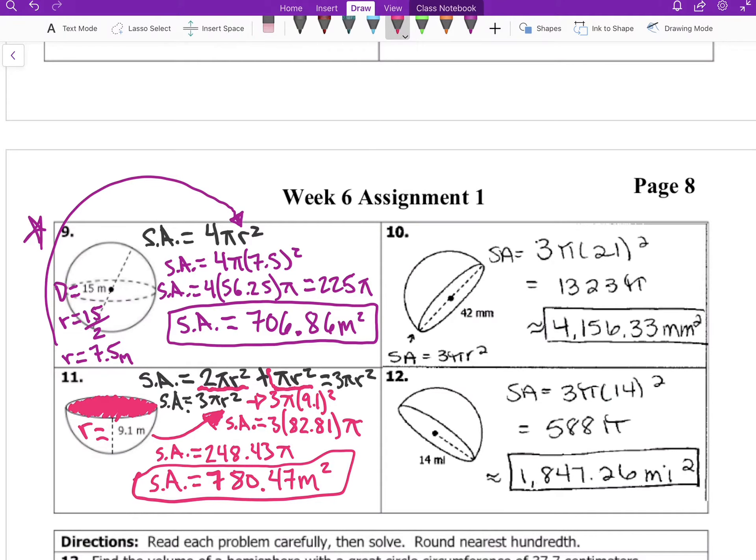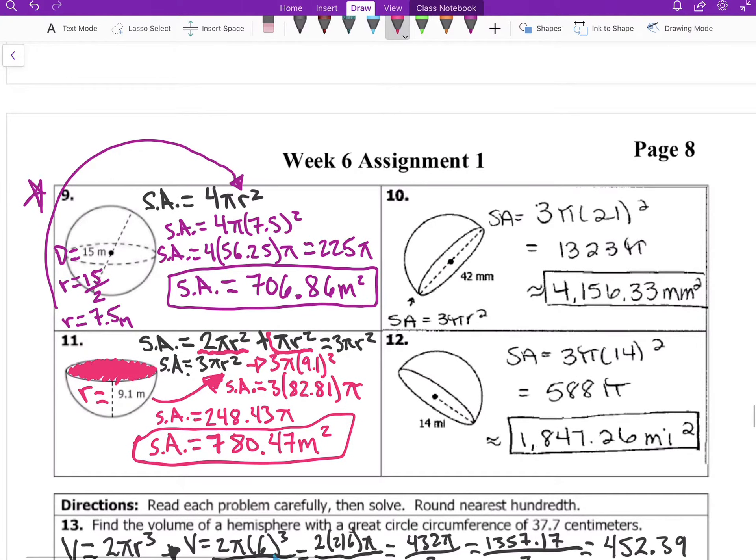This is where 3πr² comes from. The formula for surface area of a hemisphere is 3πr². So now we use that - we have r equals [9.1], plug it in and then we get 9.1 squared, multiply that, you get 82.81 times 3, 248.43π. Multiply π, then our surface area for the hemisphere is 780.47 meters squared. And that is how you do number 11.